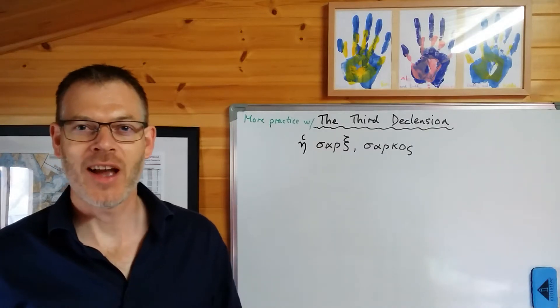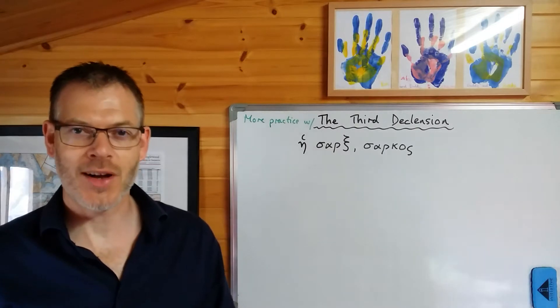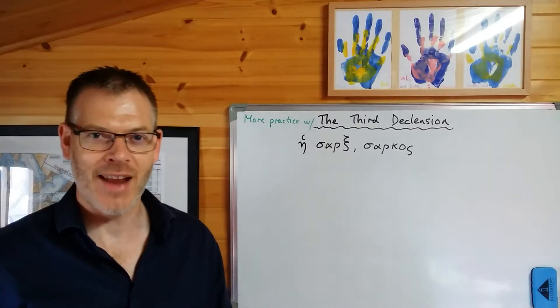Hi everybody, welcome back. We are looking today at Jeremy Duff, Elements of New Testament Greek. We're looking at chapter 12, we're looking at the third declension, which is this new family of nouns.